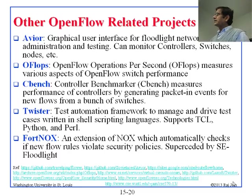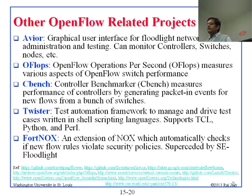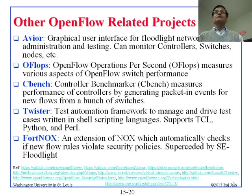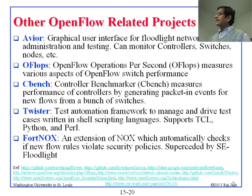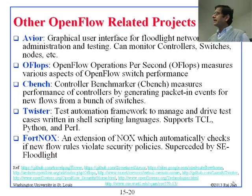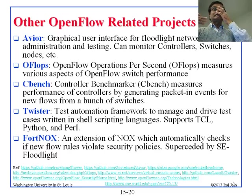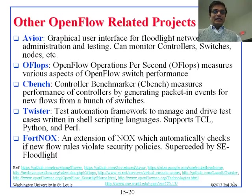Twister is a test automation tool to manage and drive test cases written in any scripting language — it supports TCL, Python, and Perl. So you write whatever you want to do in a script and run it on Twister. Fort Knox is an extension of NOX which automatically checks new flow rules to see if they violate security policies. It has been succeeded by SE Floodlight — so as NOX became Floodlight, Fort Knox became SE Floodlight.